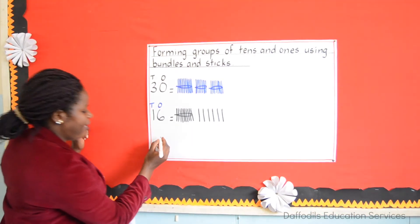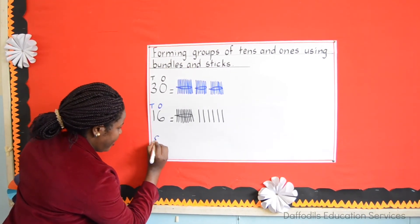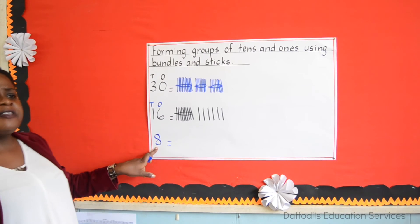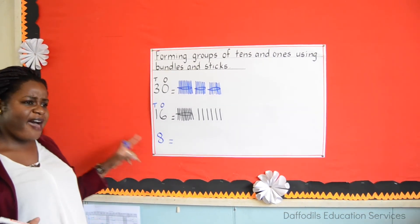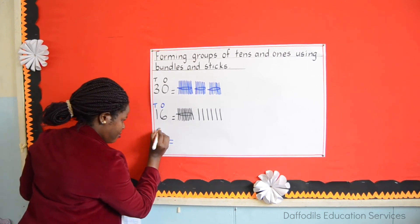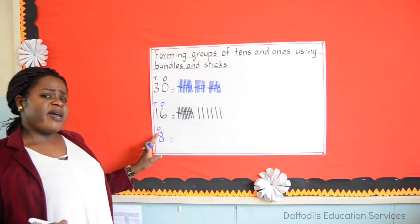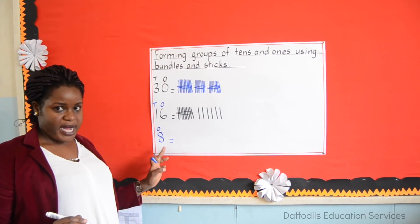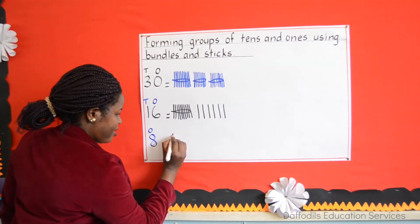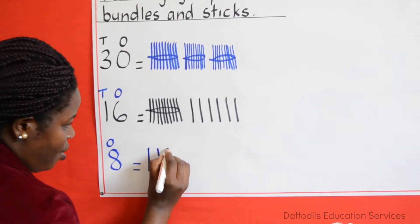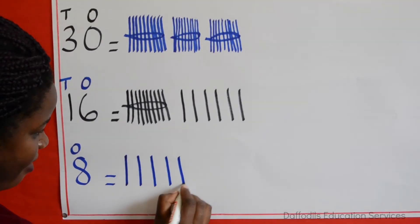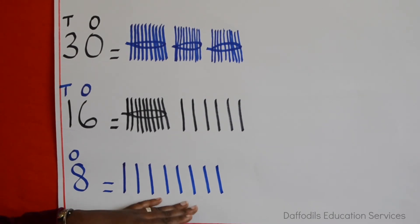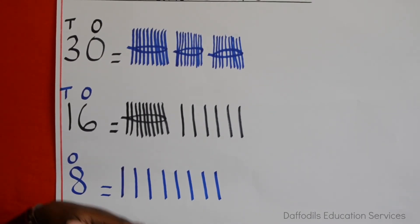What about if you're given the number 8 to draw bundles and sticks? We know that if it's a one-digit number, you give it a place value of 1s. With 1s, we draw the sticks. That means this one, we don't have any 10s — we don't need bundles. So we'll just draw our sticks: 1, 2, 3, 4, 5, 6, 7, 8. And we are done. That's how we draw bundles and sticks. Thank you for listening.